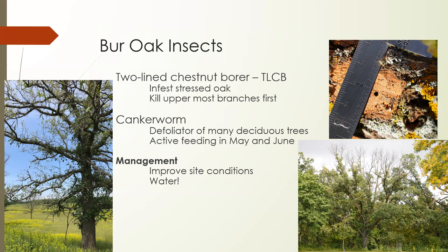Let's talk about bur oak. One pest is the two-line chestnut borer — it loves stressed bur oaks and is sometimes the thing that pushes them over the edge. The tree will start to have dead branches in the top and then it'll kind of work down. Another thing you'll see is cankerworm — those little inchworms that come out and eat leaves. They usually hit elm trees first but you'll find them in May and June.